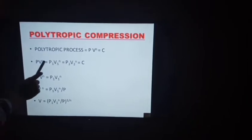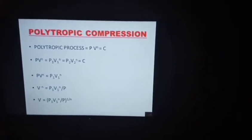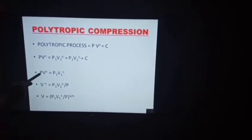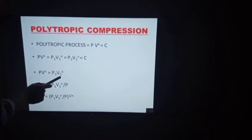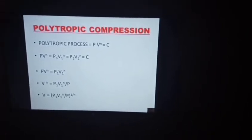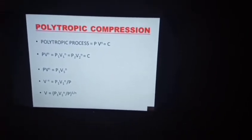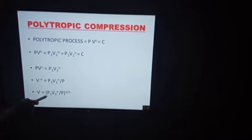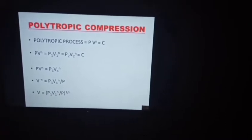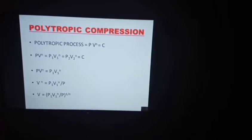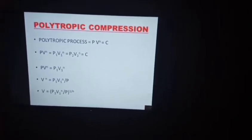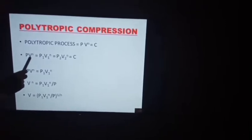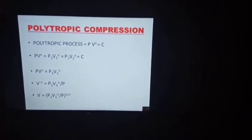We take the first two terms: PV^N equals P1V1^N. Bring P to the other side, so V^N equals P1V1^N divided by P. When the N comes to the other side it becomes 1/N, so V equals (P1V1^N / P) raised to 1/N. This is the polytropic basic formula expanded to obtain an expression for V.